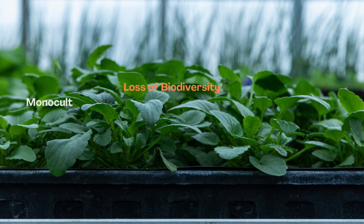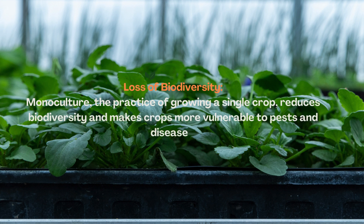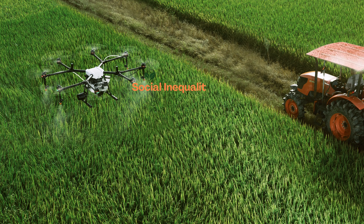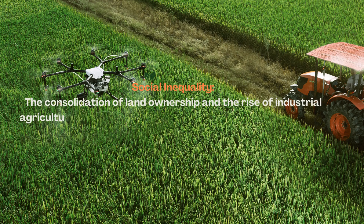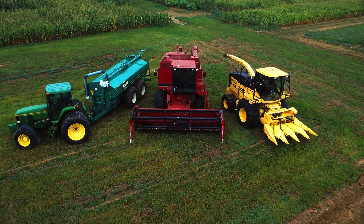Loss of Biodiversity: Monoculture, the practice of growing a single crop, reduces biodiversity and makes crops more vulnerable to pests and diseases. Social Inequality: The consolidation of land ownership and the rise of industrial agriculture often led to the displacement of small farmers and increased social inequality.